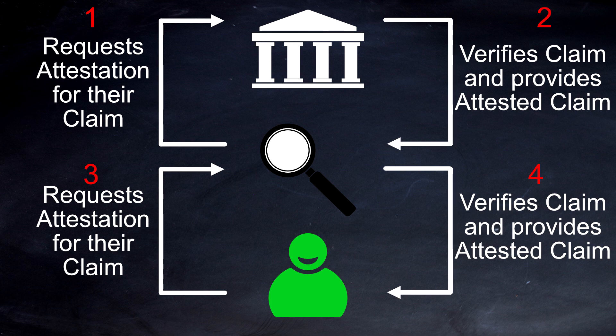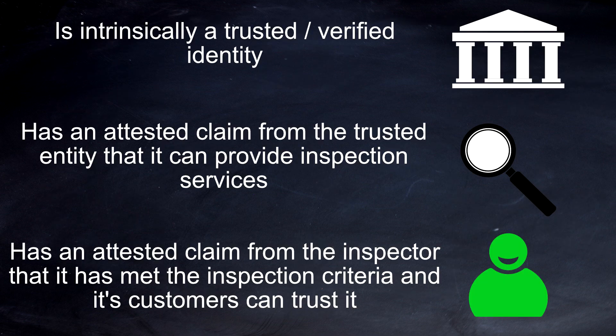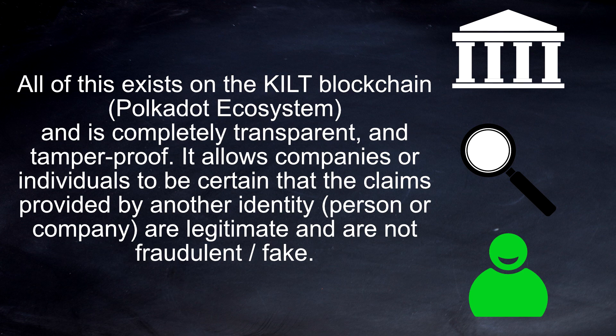The chain of trust must be maintained. The certifying authority is an intrinsically trusted or verified identity. The inspection agency has an attested claim from that trusted entity confirming it can actually provide inspection services. The company then has an attested claim from the inspector showing it has met the inspection criteria, and it can show that attested claim to its customers. All of this exists on the KILT blockchain or parachain in the Polkadot ecosystem.